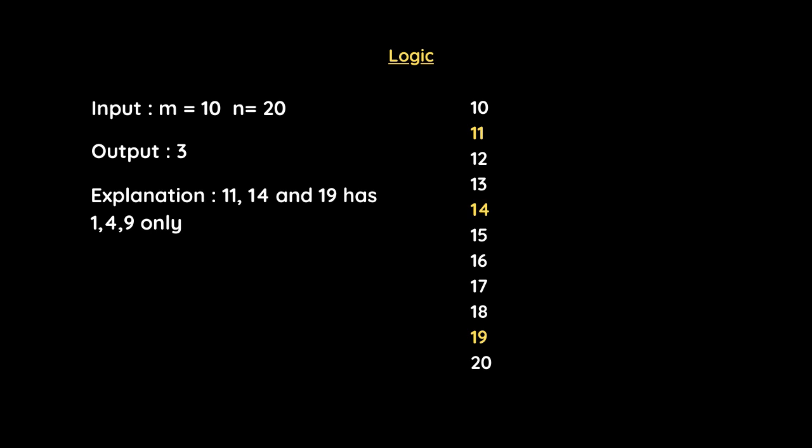From 10 to 20 we have 11 numbers: 10, 11, 12, 13, 14, 15, 16, 17, 18, 19, and 20. We will not consider 10 because one of its digits is 0, which is not 1, 4, or 9.